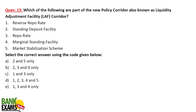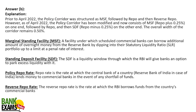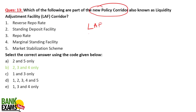Question three: which of the following are part of the new policy corridor, also known as the liquidity adjustment facility (LAF) corridor? Prior to April 2022, the policy corridor included MSF, repo, and reverse repo. But now SDF has been introduced, replacing reverse repo. The new LAF corridor consists of MSF, repo, and SDF — these three are parts of the new liquidity adjustment facility.